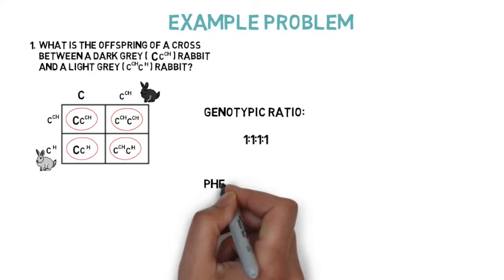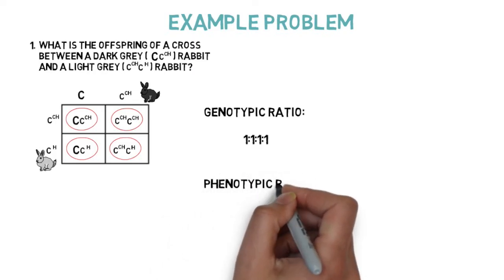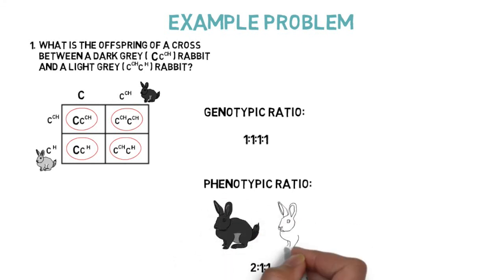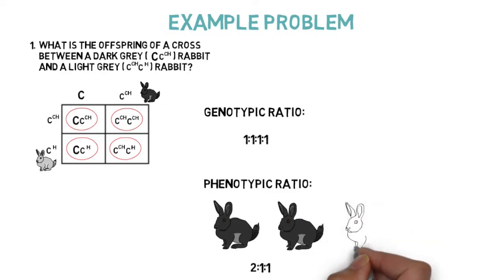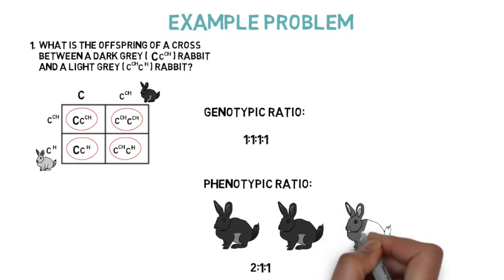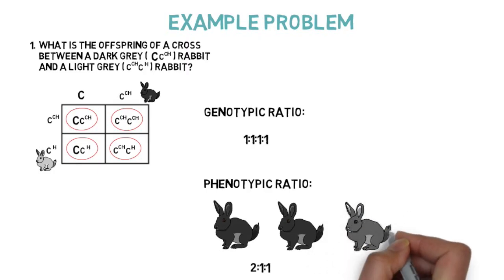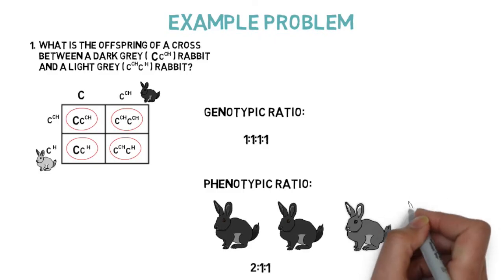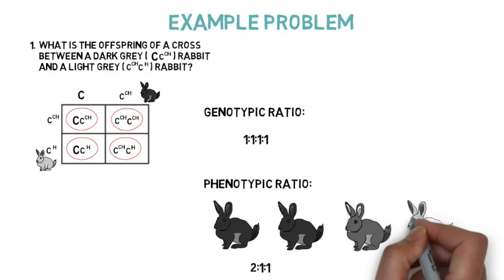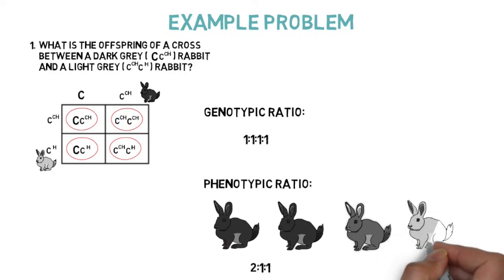Our completed Punnett square also tells us that our phenotypic ratio is 2 to 1 to 1. There are 2 dark gray rabbits because 2 of the genotypes have a capital C allele. There is 1 chinchilla rabbit because 1 of the genotypes is lowercase cch lowercase cch, and that is the only allele combination that creates a chinchilla rabbit. And lastly, there is 1 light gray rabbit because 1 of the genotypes is lowercase cch lowercase ch.